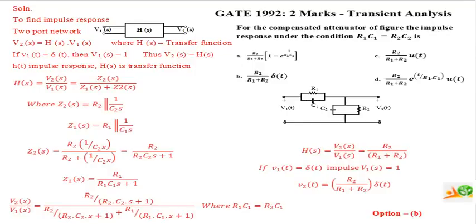A set of typical GATE problems is selected for video solution in the area of transient analysis of networks. The first problem considered here is from GATE 1992. It is of two marks and is in the area of transient analysis.